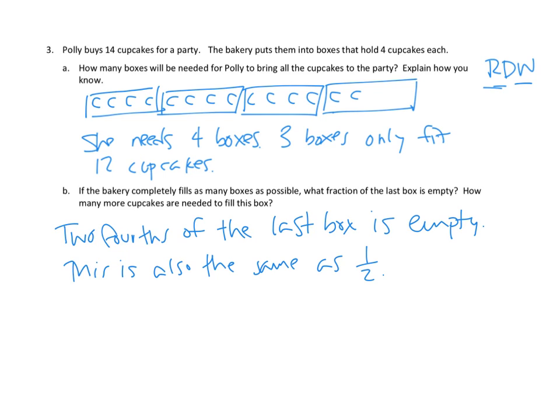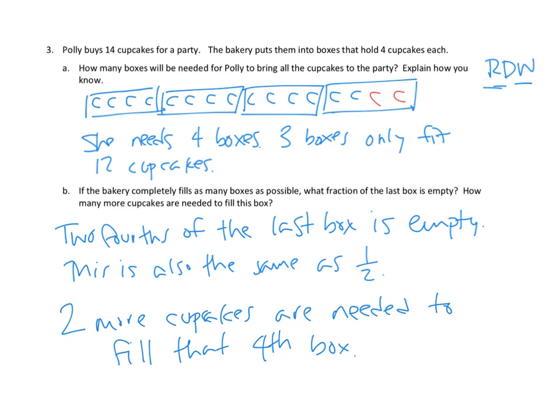And how many more cupcakes were needed to fill the box? That's easy. We could have put two more in here. I'm going to put them in red. We could put two more cupcakes in there to fill it up. Two more cupcakes are needed to fill that fourth box. Does that make sense to our diagram? We filled up one, two, three boxes. In that fourth box, we only filled two of the spots that left either two-fourths or one-half. Two-fourths is equivalent to one-half of that last box empty. And if we wanted to know how many more cupcakes were needed to fill that in, two more cupcakes are needed to fill that fourth box. I think we've got it.